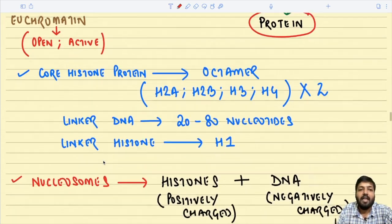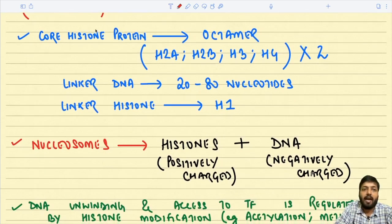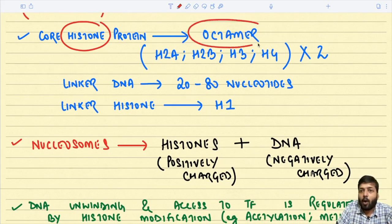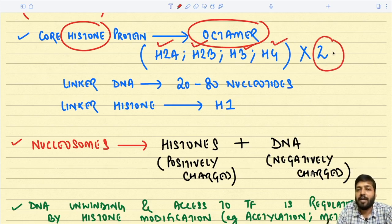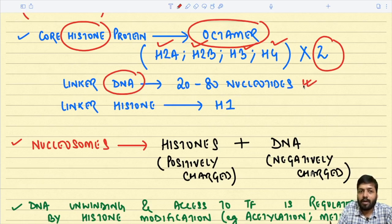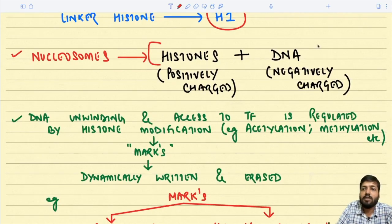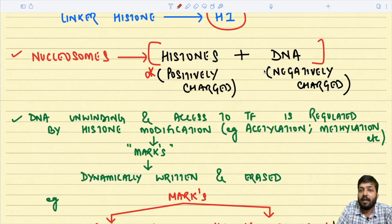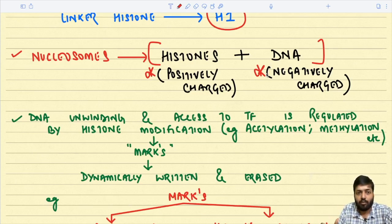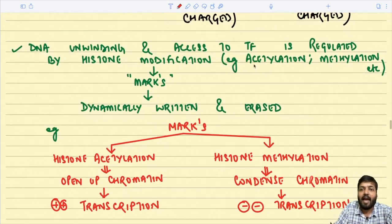The histones form an octamer of H2A, H2B, H3, H4 (×2). The linker DNA is 20 to 80 nucleotides and the linker histone is H1. Remember: histones are positively charged whereas DNA is negatively charged — and this facilitates the wrapping of DNA around the histone. DNA unwinding and access to transcription factors is regulated by histone modification.